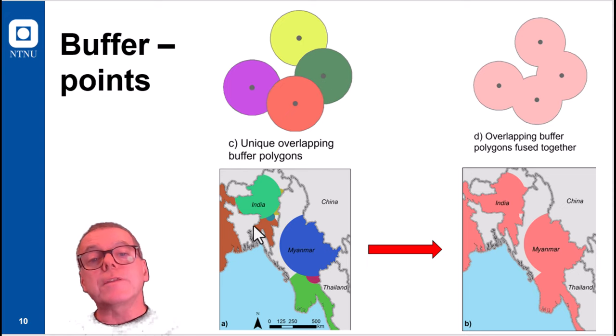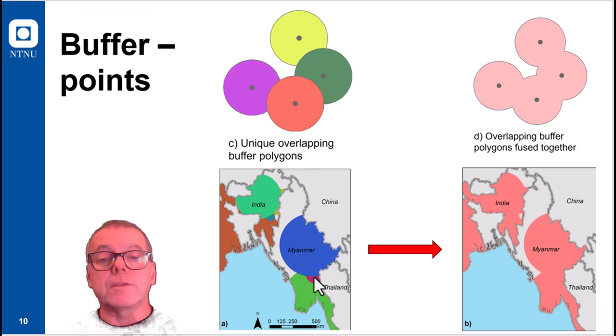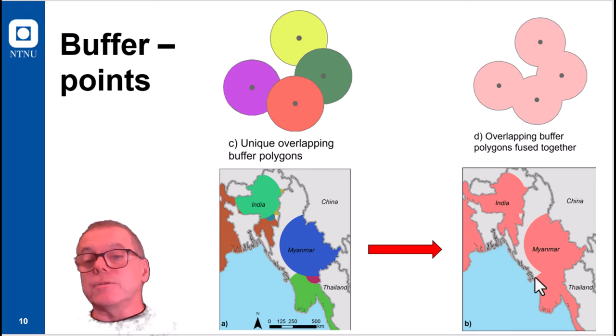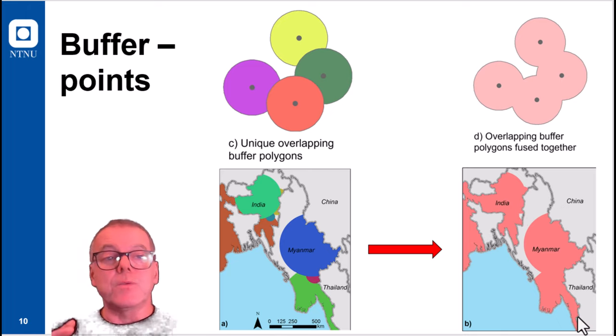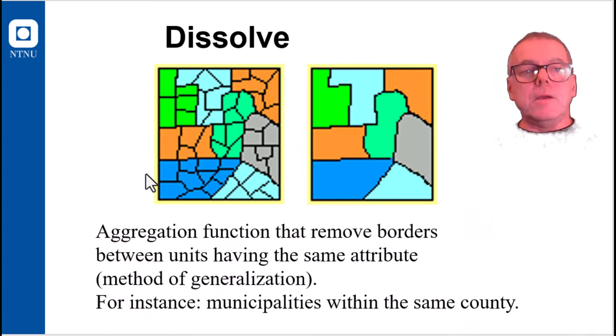Do you want the result to be unique overlapping buffer polygons? For instance, for the armed conflict example, this would result in various conflict polygons being represented as overlapping polygons. Or do you want to have them fused together? If you want the latter, what is invoked is then a dissolve operation.